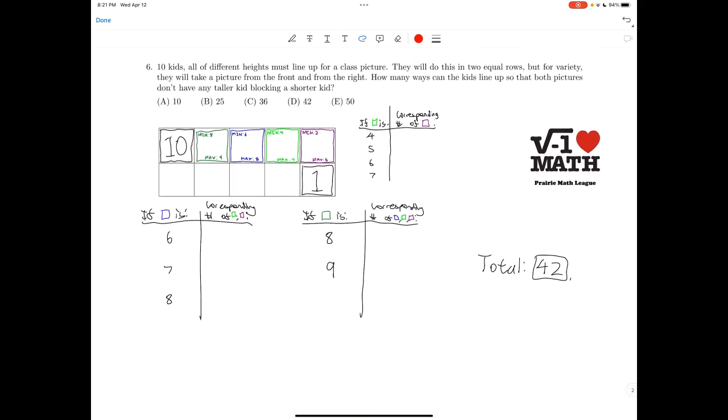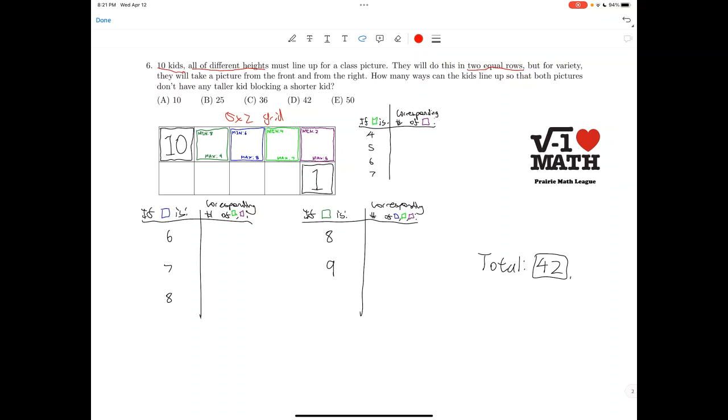For problem number 6, we have 10 kids, all of different heights, and they must line up in 2 equal rows. So this is a 5 by 2 grid. They will take a picture from the front and from the right. And in each case, there is no taller kid blocking a shorter kid. We need to find the number of ways.